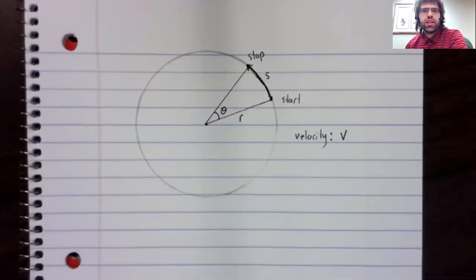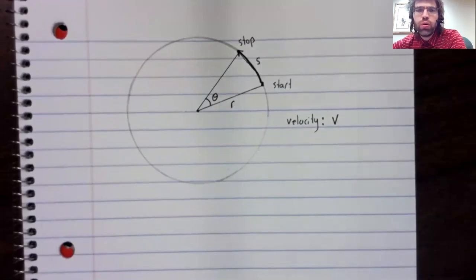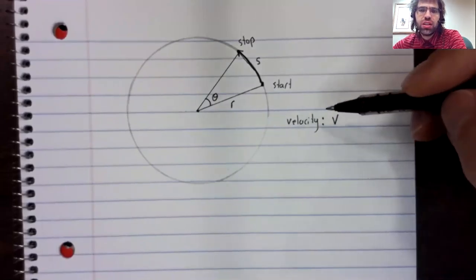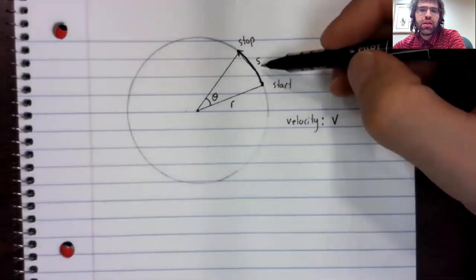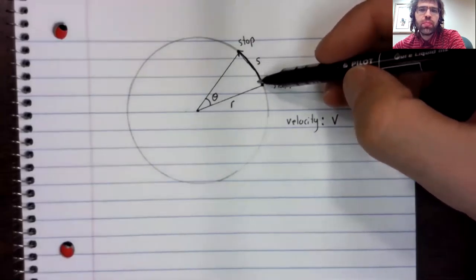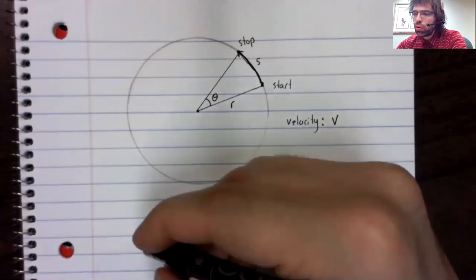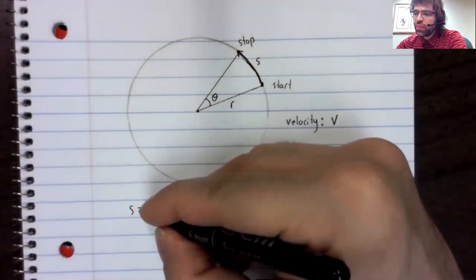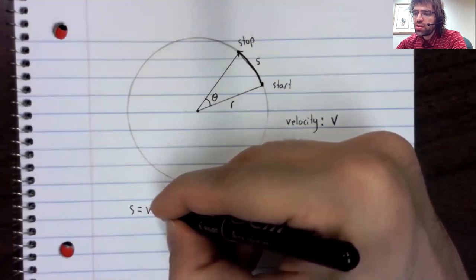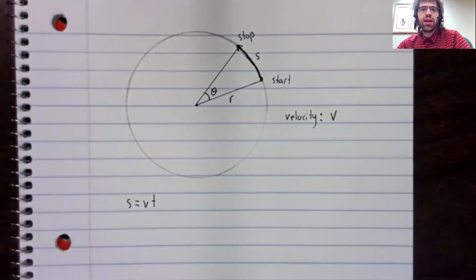We'll now write down two formulas involving velocity. Notice that I've labeled the length of this arc. The length of this arc is the distance traveled, and distance equals rate times time.